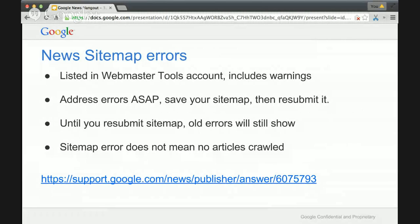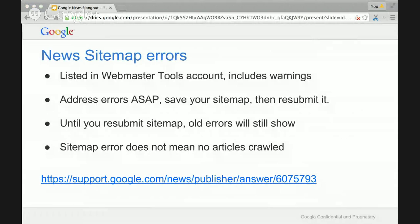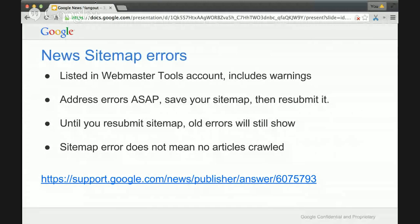A lot of questions we get from news publishers is how can I fix this error? We'll troubleshoot and realize the error is actually months old — you just had to resubmit your sitemap to clear it. Additionally, just because there's an error on your sitemap, keep in mind we are crawling your articles naturally from your news sections as well. Even if there's an error on your sitemap, it doesn't mean we aren't crawling your articles — we just default back to using your news sections to find them.